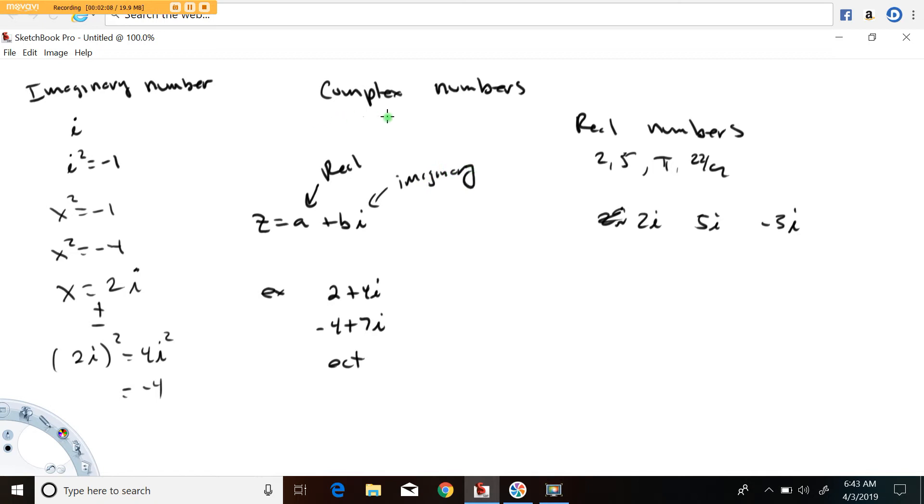The complex number system is just a more general number system. Really, all the values I've talked about in this video are a subset of the complex number system. Even the real number two, you could think of that as 2 plus 0i.